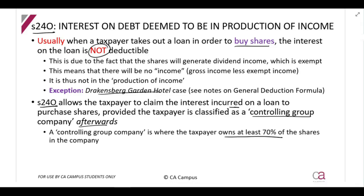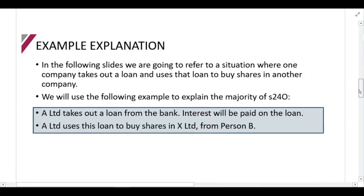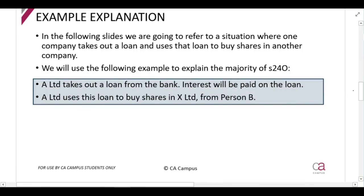This section was introduced because there are basically two ways to take over another company. You can buy all of that company's assets — in which case you could claim the interest deduction on the loan used — or you can buy the shares, in which case you have this issue that you can't. This section was created to fix that, so buying shares is treated almost the same as buying the assets.